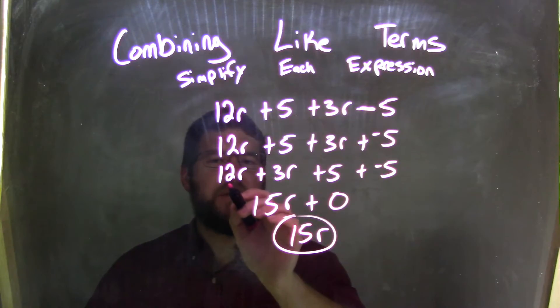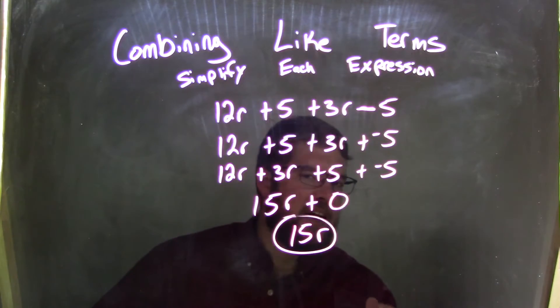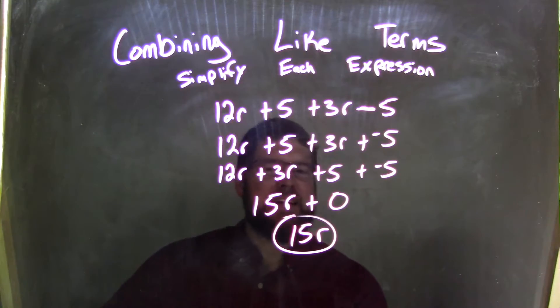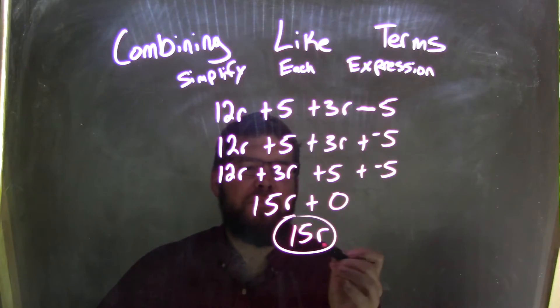And now we added together our like terms. 12r plus 3r, which is 15r. 5 plus negative 5 cancel each other out, so it's 0. And we know that adding 0, being the additive identity, doesn't change anything, so we're left with our final answer of just 15r.